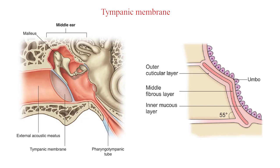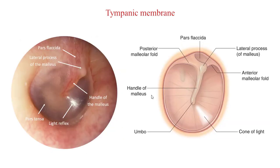The tympanic membrane is made of three layers. The epithelial lining of the external acoustic meatus continues as the external layer of the tympanic membrane, while the lining of the middle ear provides the inner layer. Sandwiched between these two delicate epithelial linings is a layer of fibrous tissue that provides structure for the tympanic membrane. The tympanic membrane has a number of important landmarks.